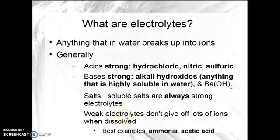Weak electrolytes do not give off lots of ions when dissolved. In fact, typically they'll break up into ions less than five percent. Our best examples are ammonia and acetic acid — ammonia is a weak base and acetic acid is a weak acid. That's why you can use acetic acid in food, but you're not going to put hydrochloric acid in your food. You can, using gloves, wash with ammonia solution, but you're not going to be able to wash with sodium hydroxide solution.